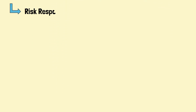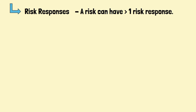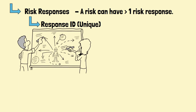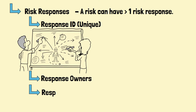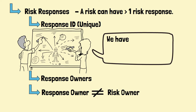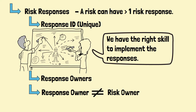Risk responses are definitely required in the risk register. Each risk can have more than one risk response in order to ensure the risk can be managed effectively. Similar to risks, each response will have a unique ID, which can help identify the responses easily. Of course, each response will have a response owner. The response owners can be different from the risk owner, as most of the time the implementation of risk response requires certain skill and expertise. It is always prudent to assign the person with the right skill to plan and implement the response.